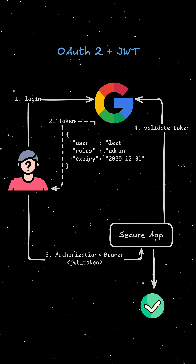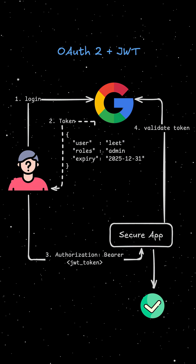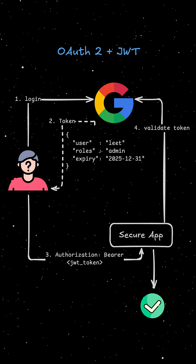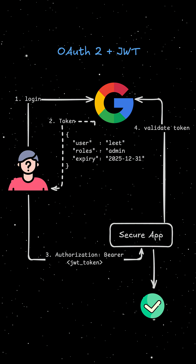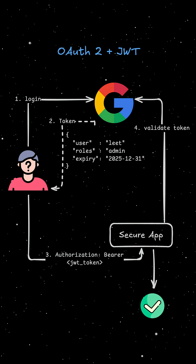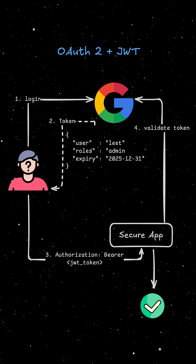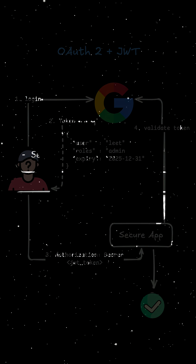For example, you log in to Spotify using your Google account. Google authenticates you, and Spotify just gets a secure token.